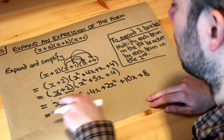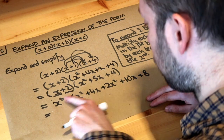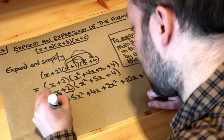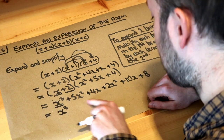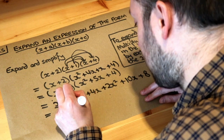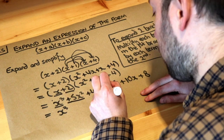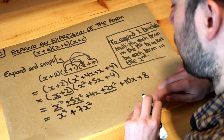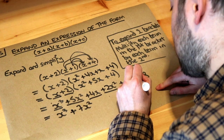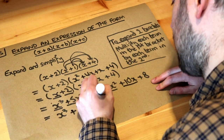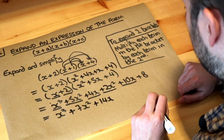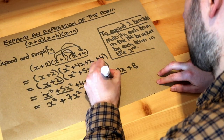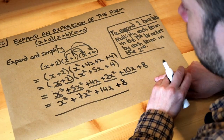Now we collect like terms to tidy up. We have one x³ term — no others, so just x³. For x² terms: 5x² plus 2x² is 7x². For x terms: 4x plus 10x is 14x. And finally the constant term is 8. So the final answer is x³ + 7x² + 14x + 8.